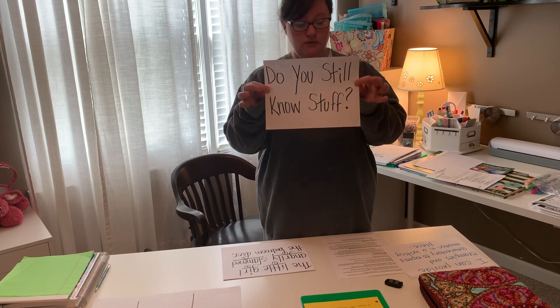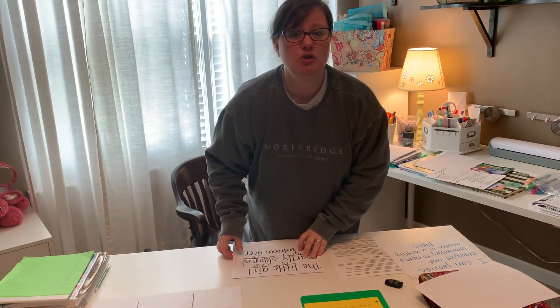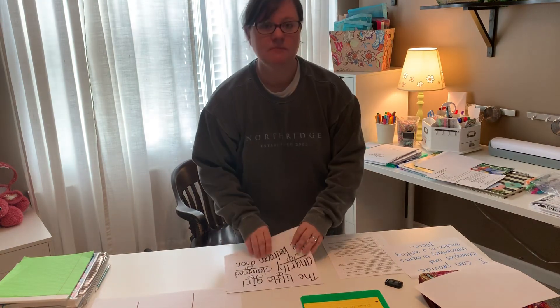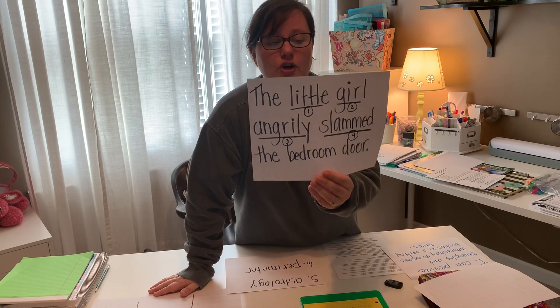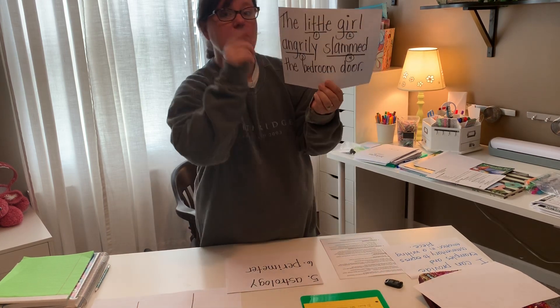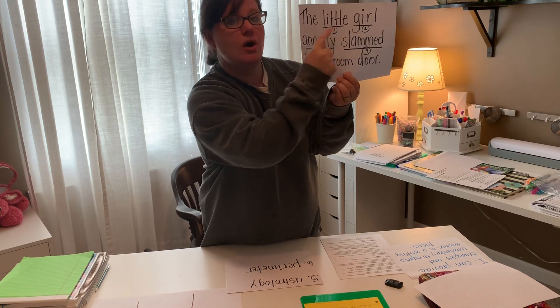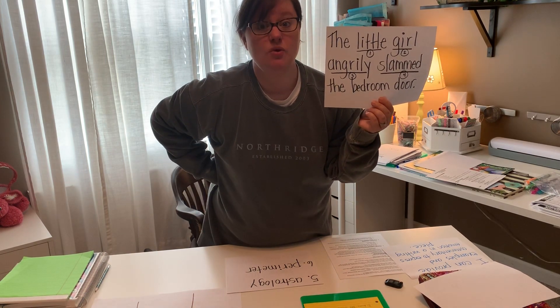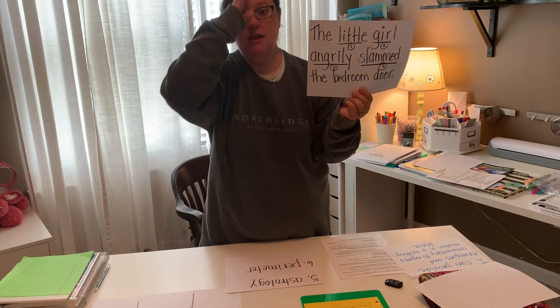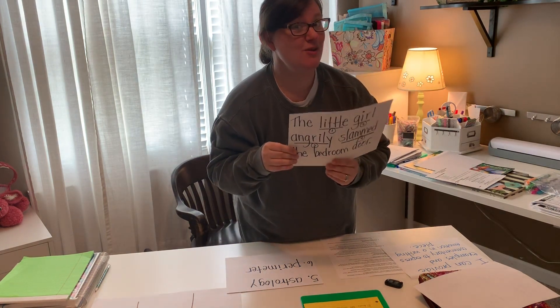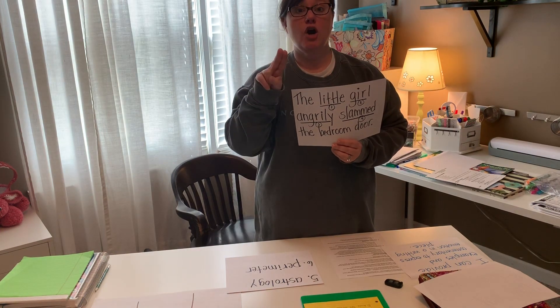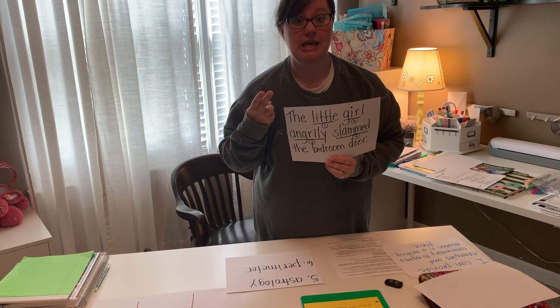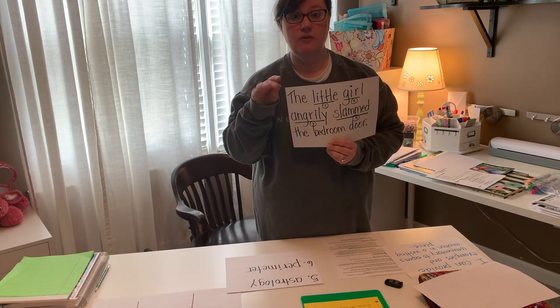You've numbered 1 through 12. Here's a sentence: 'The little girl angrily slammed the bedroom door.' For number one, I want to know the part of speech of the word 'little.' It's been three weeks — you might want to review. Parts of speech: nouns are person, place, or thing; verbs can be action or linking — remember those linking verbs can trip us up a little, so be careful with that.